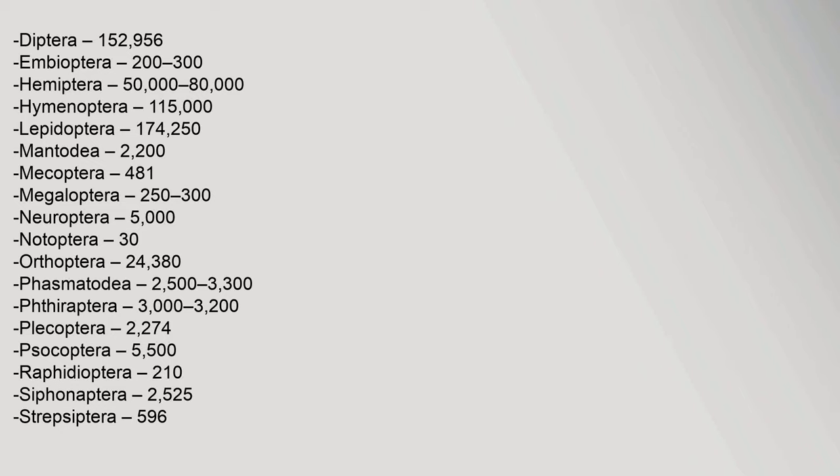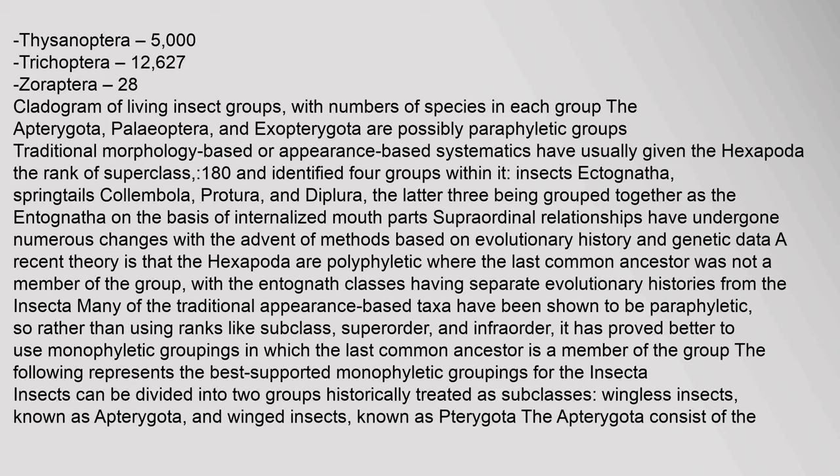Insects can be classified into a cladogram of living insect groups. The Apterygota, Palaeoptera, and Exopterygoda are possibly paraphyletic groups. Traditional morphology-based systematics have usually given the hexapoda the rank of superclass and identified four groups within it: insects (Ectognatha), springtails (Collembola), Protura, and Diplura — the latter three grouped together as the Entognatha on the basis of internalized mouth parts.